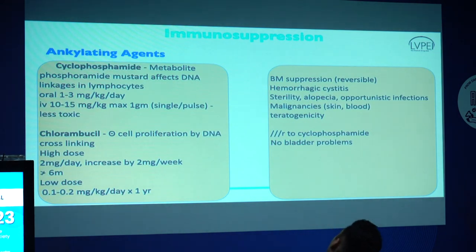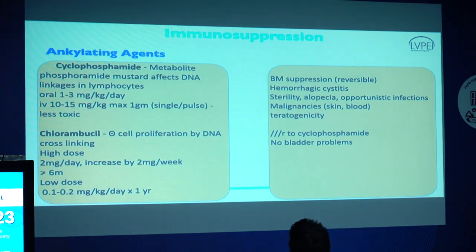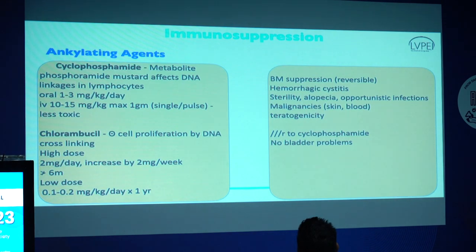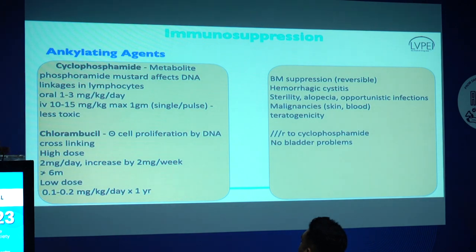The alkylating agents are a little more toxic, specifically cyclophosphamide, mainly because it tends to cause hemorrhagic cystitis. It's important for patients to be very well hydrated. The IV drug given in pulse doses is less toxic, which is beneficial to patients. You can give three-weekly or monthly pulse doses of cyclophosphamide to reduce significant inflammation.